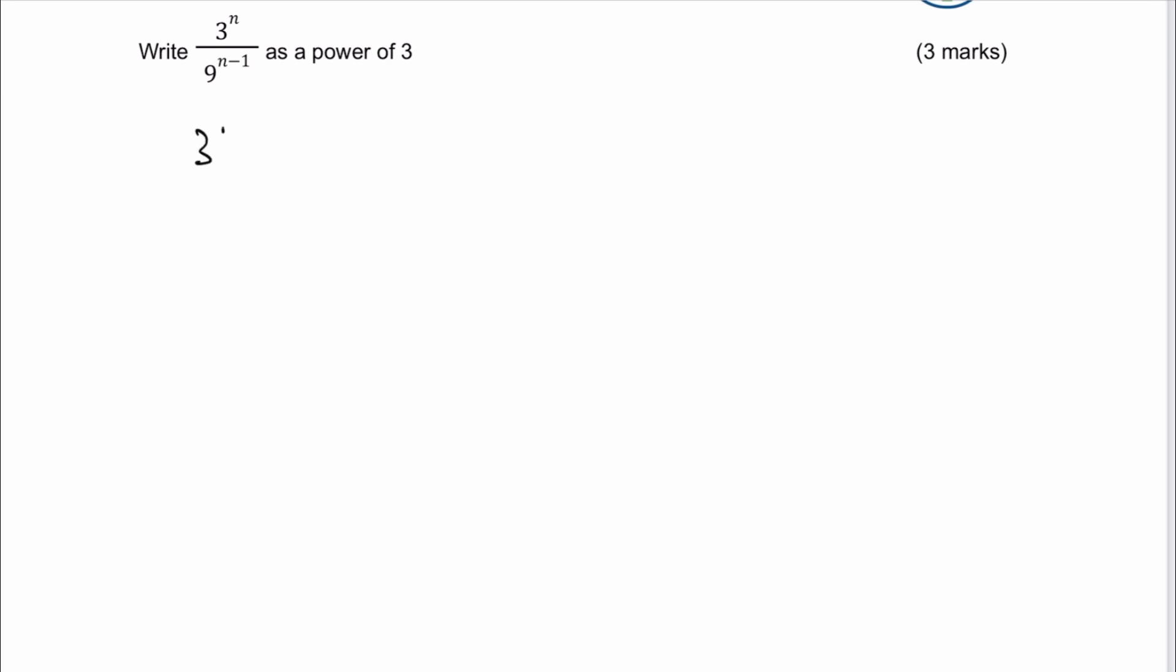So the top I'm going to leave as 3 to the power of n. The bottom, rather than writing 9, I'm going to write 3 squared, because that's exactly the same as 9. And then that's to the power of n minus 1. So what happens when we expand those brackets at the bottom, or expand the bracket?